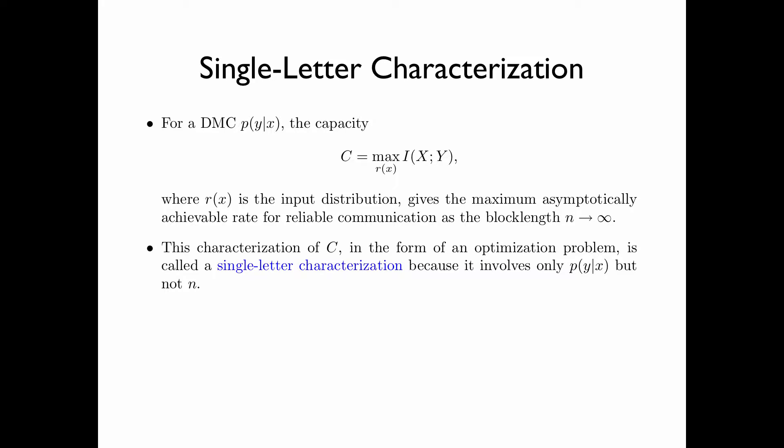This characterization of C in the form of an optimization problem is called a single-letter characterization because it involves only p(y|x), the transition matrix of one use of the channel, but not the block length n.